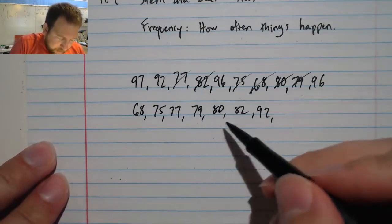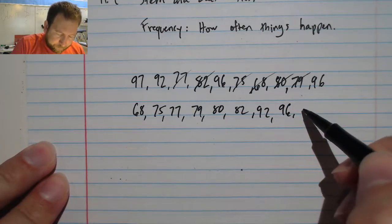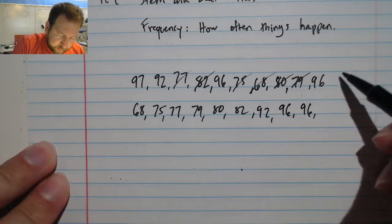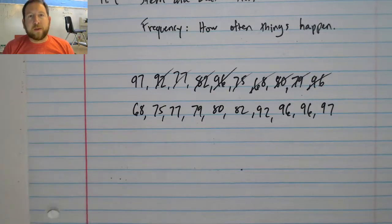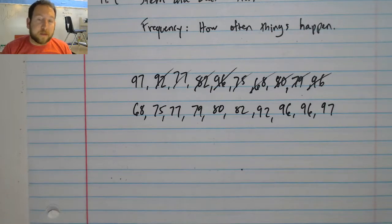I have a 92. I have a 96, another 96, and finally a 97. Now what I can do with this is I can turn it into a stem-and-leaf plot.